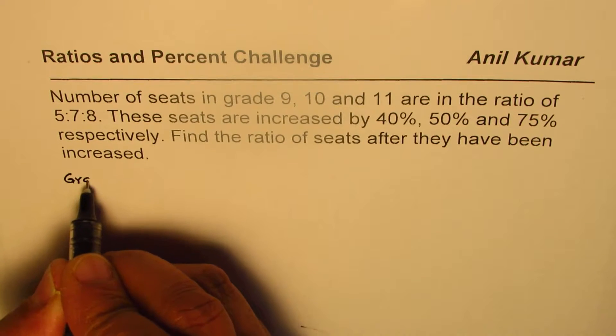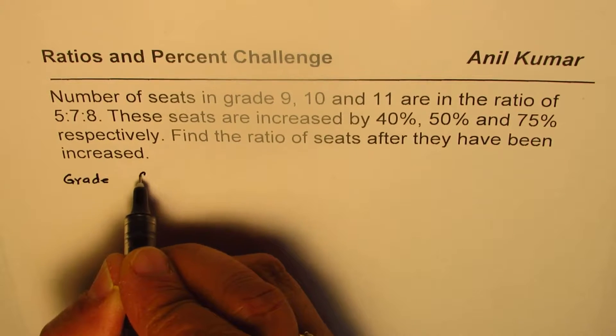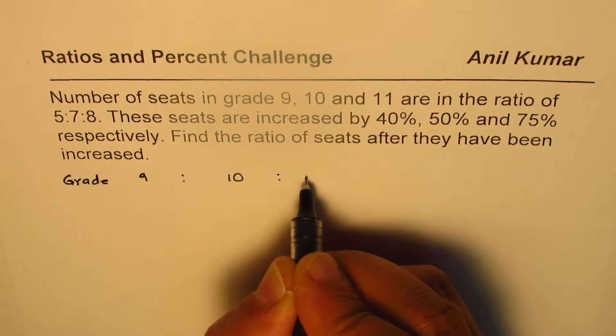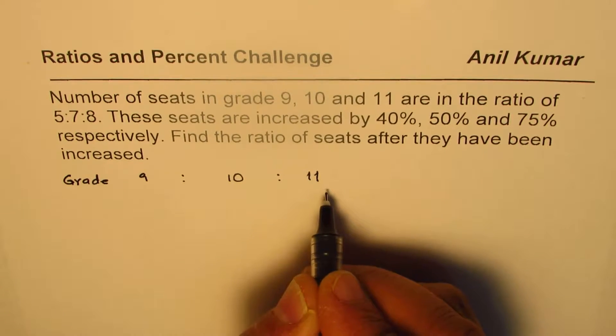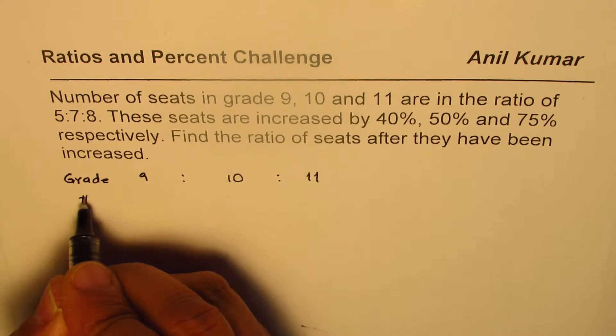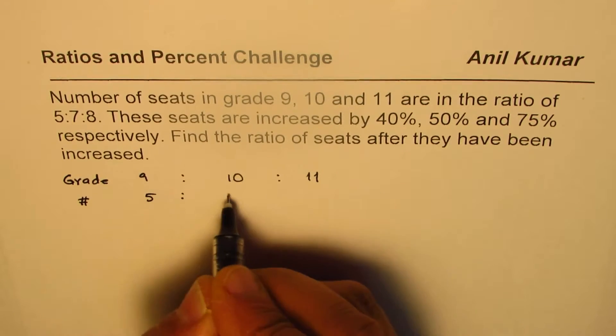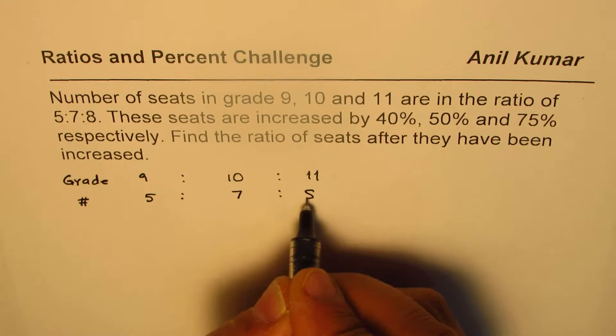What are we given? So we are given the grade 9 students is to grade 10 students is to grade 11 students. The ratio in number of students is 5 is to 7 is to 8. That is what we are given.